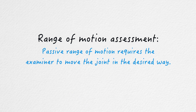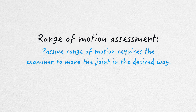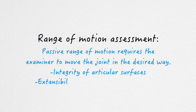In contrast, an assessment of passive range of motion involves the examiner moving the joint into the desired position, or the examiner assisting the patient in doing so. An assessment of passive range of motion provides information on the integrity of the articular surfaces and the extensibility of the joint capsule, the associated ligaments, muscles, fascia and skin.